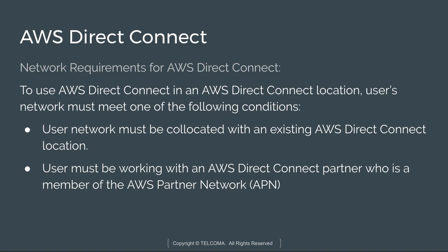In summary, when connecting a user network to AWS Direct Connect, you need to verify that your network is co-located with a Direct Connect location, or that the user is a member of the AWS Partner Network, or working with an independent service provider to connect with Direct Connect.